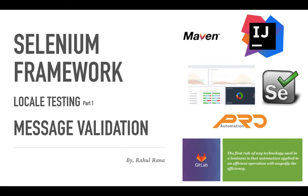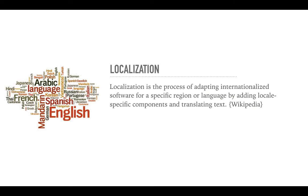Hello everybody and welcome to Pro Automation. This is Rahul and today we'll learn to do message validation as part of localization testing. This is Part 1 of the tutorial and we'll be using Property Resource Bundle. You can also refer to the video on managing configurable parameters using property files. Localization is the process of adapting internationalized software for a specific region or language by adding locale-specific components and translating text.